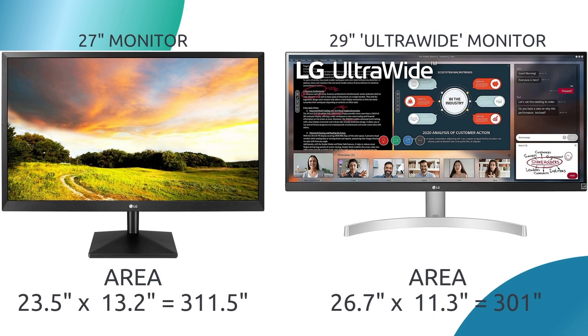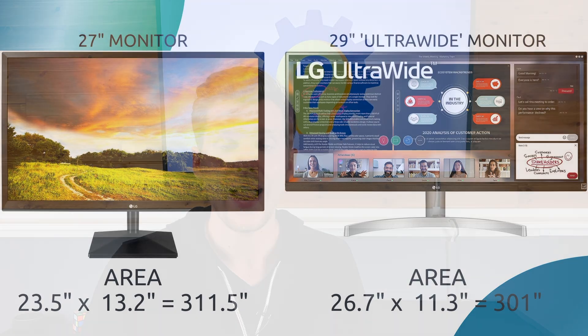For a real-world example, let's compare these two LG monitors. One is a 27-inch monitor and one is a 29-inch ultrawide monitor. While at a glance the 29-inch monitor looks bigger, the 27-inch monitor actually has 2.3% more surface area. By being an informed consumer, you can choose a screen that is right for your needs instead of falling prey to marketing tricks.